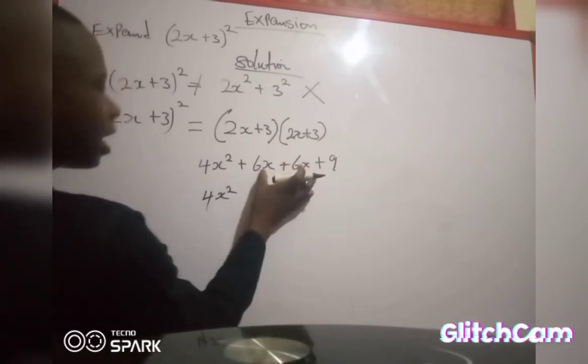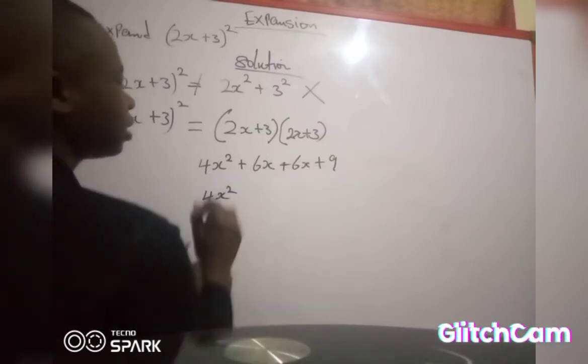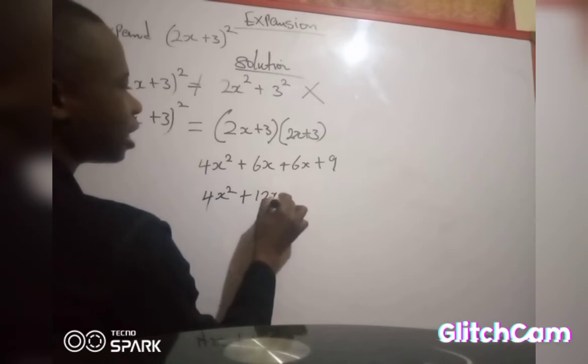So we can add them together because they are the same. So 6s plus 6s is equal to 12s, then plus 9.